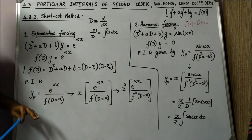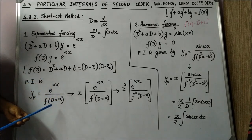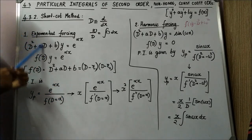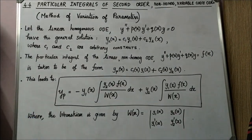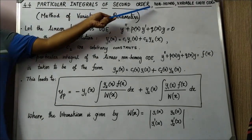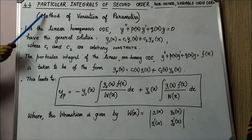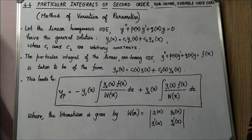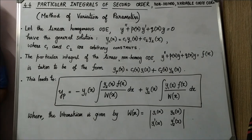For polynomial forcing, method of undetermined coefficients is perfectly fine. The shortcut operator method also exists for polynomial forcing, but it is more complex, so undetermined coefficients is preferred. This is the last part of ordinary differential equations — how to find particular integrals of second order non-homogeneous equations, including variable coefficient equations, using the method of variation of parameters.